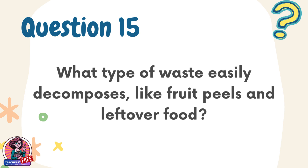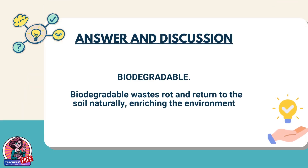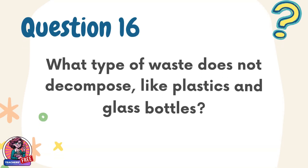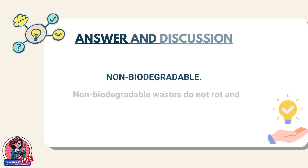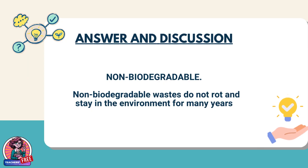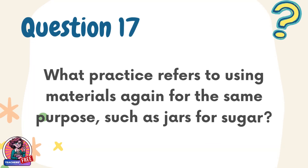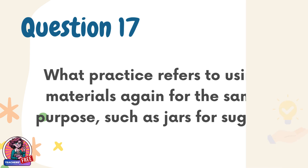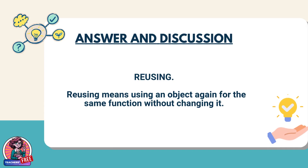Question 15. What type of waste easily decomposes, like fruit peels and leftover food? Answer: Biodegradable. Biodegradable wastes rot and return to the soil naturally, enriching the environment. Question 16. What type of waste does not decompose, like plastics and glass bottles? Answer: Non-biodegradable. Non-biodegradable wastes do not rot and stay in the environment for many years. Question 17. What practice refers to using materials again for the same purpose, such as jars for sugar? Answer: Reusing. Reusing means using an object again for the same function without changing it.